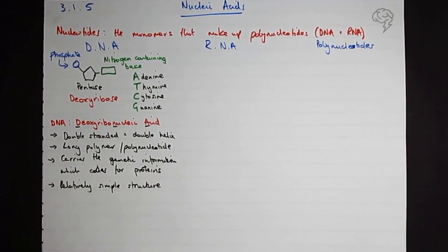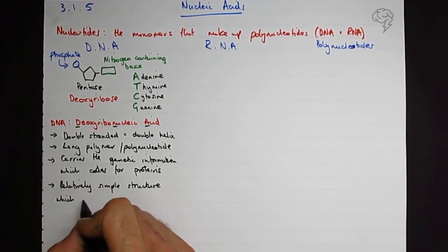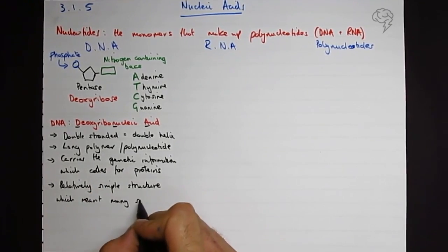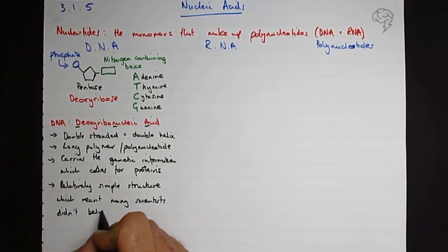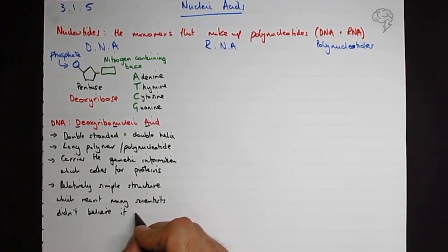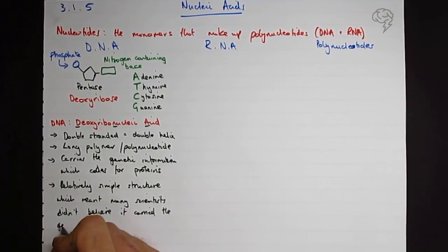It has a relatively simple structure if you consider how much information it carries. And this meant that many scientists didn't believe it could be the genetic carrying molecule. They didn't think it could have enough data in it. Obviously they do now. This was blown out of the water by Watson and Crick, who were scientists in the lab of molecular biochemistry, the LMB in Cambridge in 1952. And they, with the help of Rosalind Franklin, discovered or actually finally came across the structure of DNA.